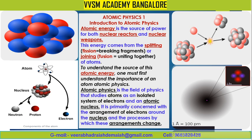This energy comes from splitting — splitting means fission, nuclear fission. Fission means breaking into fragments. Fusion means what? Unifying — uniting together of atoms. So atomic energy is of two types: nuclear fission and nuclear fusion. Fission means breaking and fusion means uniting together of two atoms.